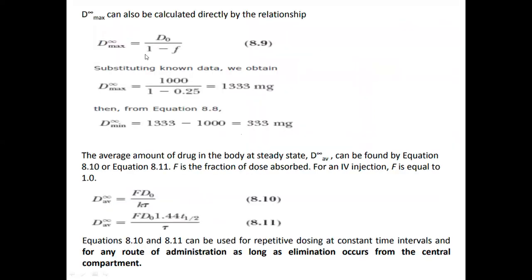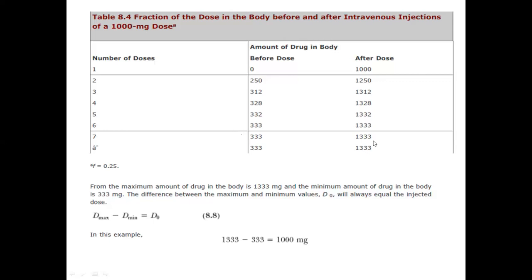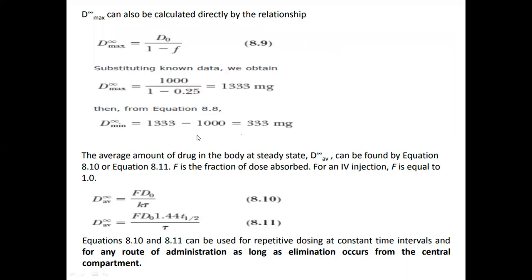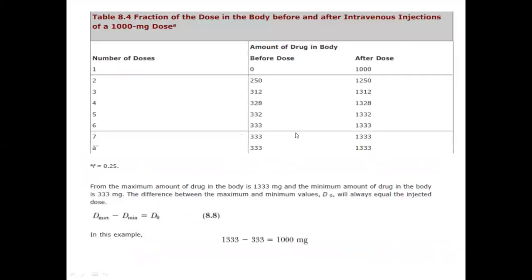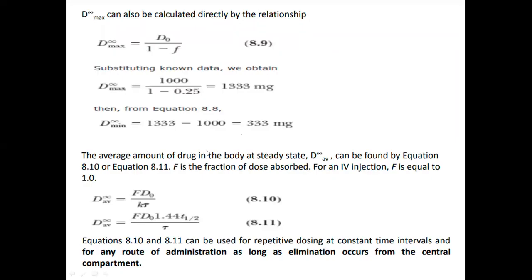This can be calculated using the formula: D_max = D0 / (1 − F). With D0 = 1000 mg and F = 0.25, we get D_max = 1000 / (1 − 0.25) = 1333 mg. The minimum dose remaining in the body is D_min = D_max − D0 = 1333 − 1000 = 333 mg.